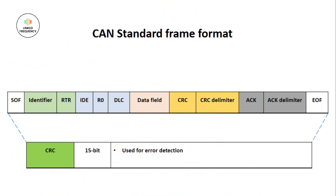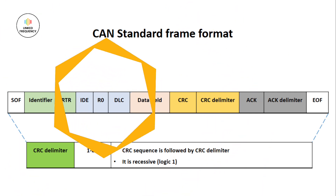CRC stands for Cyclic Redundancy Check. It is 15 bits and is used for error detection to verify if the message is properly sent over the CAN bus. Immediately after CRC is the CRC Delimiter, which is 1 bit with a recessive value. The CRC Delimiter bit gives time or space to the ECU to calculate the CRC value.